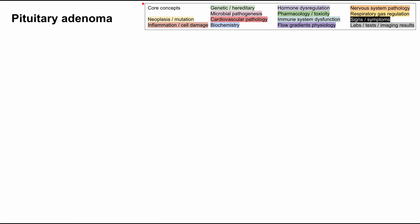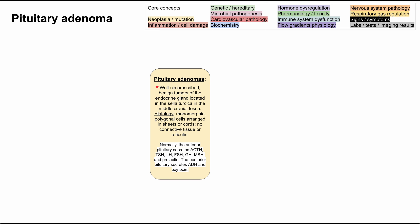Like with all of these mechanism of disease maps, the key is up here at the top right and each of the boxes will be color-coded according to which of these core concepts it represents. So let's start by defining a pituitary adenoma: it's a well-circumscribed benign tumor of the endocrine gland located in the sella turcica in the middle cranial fossa.